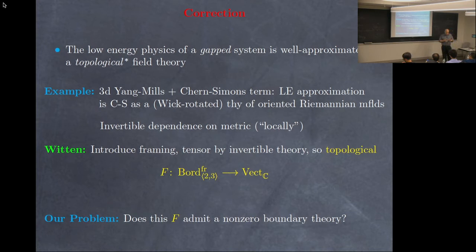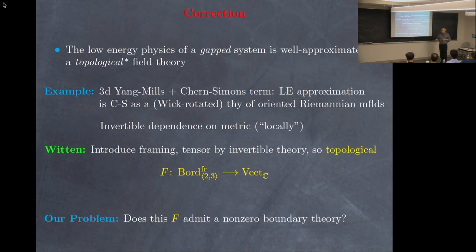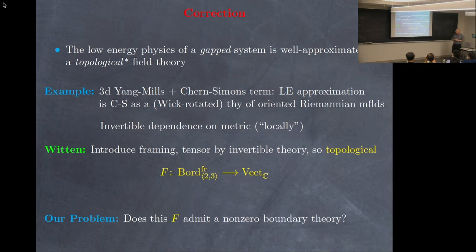So if we had a physical system whose bulk theory was approximated by some Chern-Simons theory — which might depend on the metric — and it had a gapped boundary theory that also depended on the metric, if we tensor the whole thing by this invertible theory, then we get again a topological problem — but now a topological problem about framed topological field theories. From a relativistic theory you don't expect framing, since that breaks relativistic invariance, but in this particular example you get that.